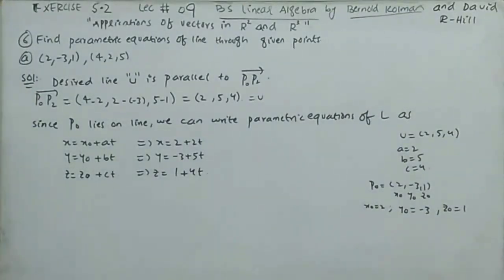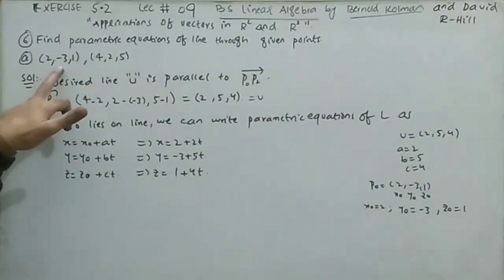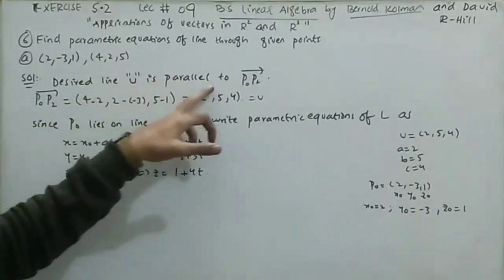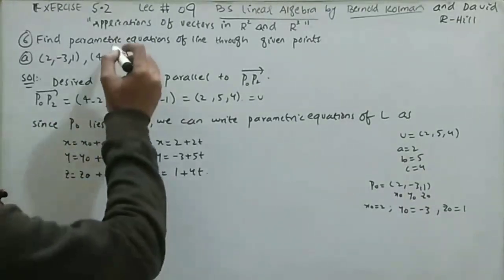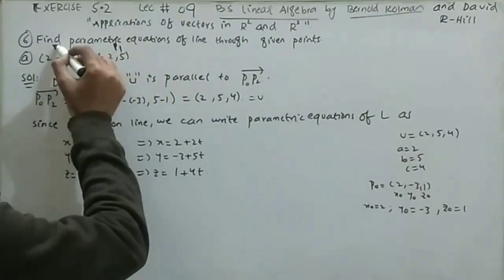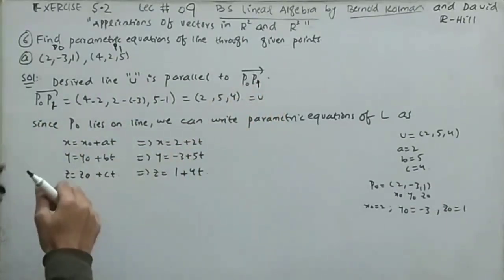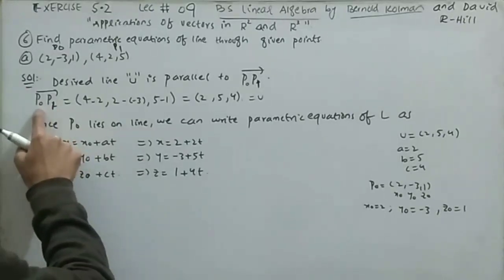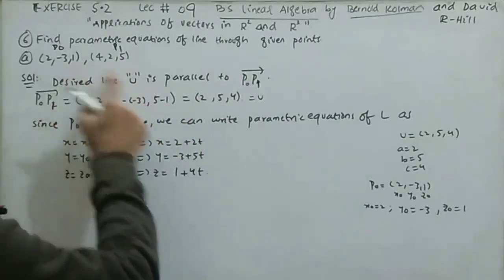Question 6: find the parametric equations of the line passing through two given points. There are four parts. For part (a), P0 = (2, −3, 1) and P1 = (4, 2, 5). The direction vector U = P1 − P0, so U = (4−2, 2−(−3), 5−1) = (2, 5, 4).